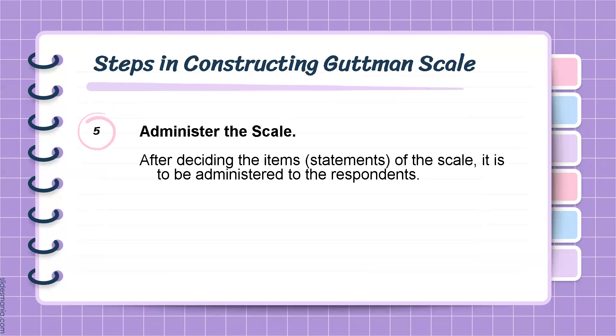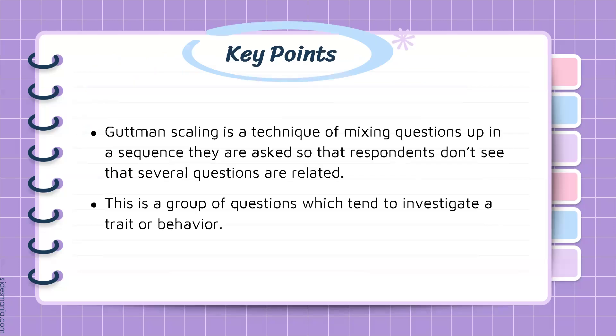The next step is to administer the scale. After deciding the items or statements of the scale, it is to be administered to the respondents. Key points to remember: Guttman's scaling is a technique of mixing questions up in a sequence they are asked, so that respondents don't see that several questions are related. And this is a group of questions which tend to investigate a particular trait or behavior.